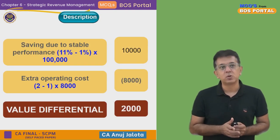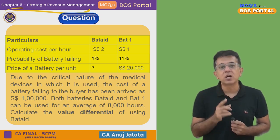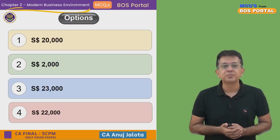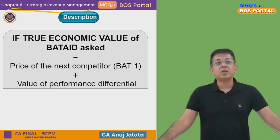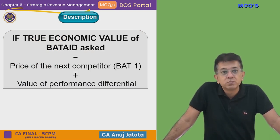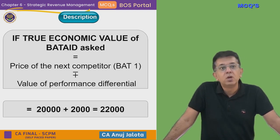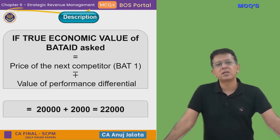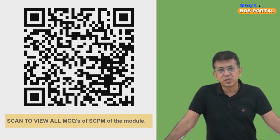Additionally, if the question had asked for the full True Economic Value (TEV) of Batad, it would be the price of the next best competitor Bat One (twenty thousand rupees) plus the value of performance differential (two thousand rupees) = twenty-two thousand rupees. That would be the TEV of Batad, although it was not directly asked in this question.